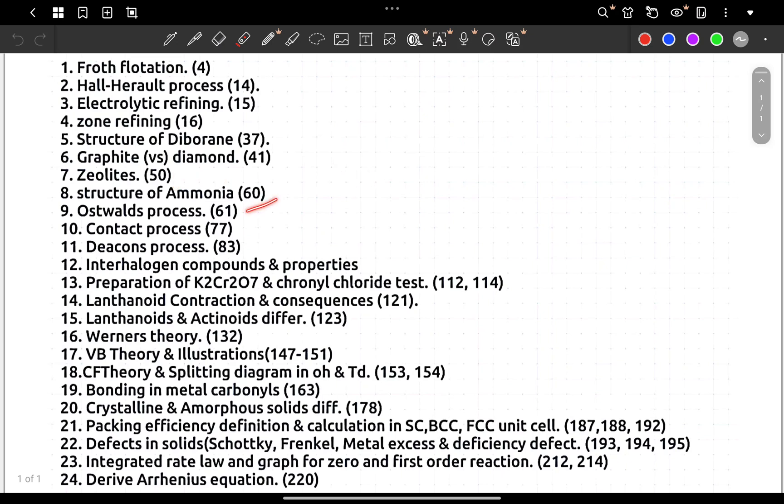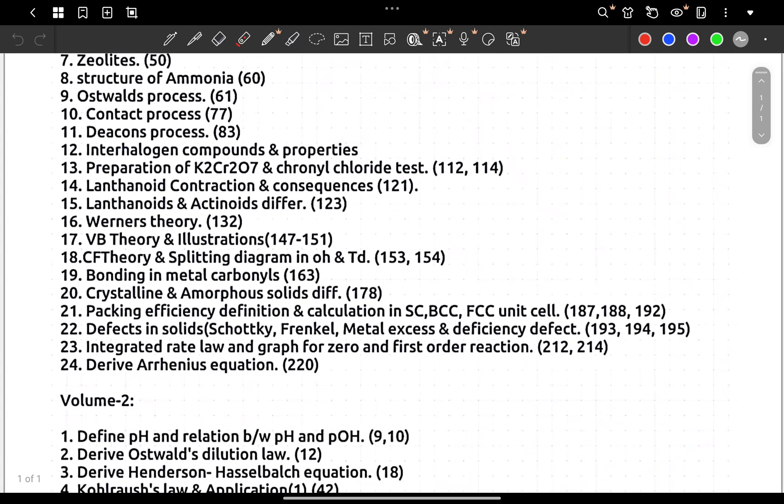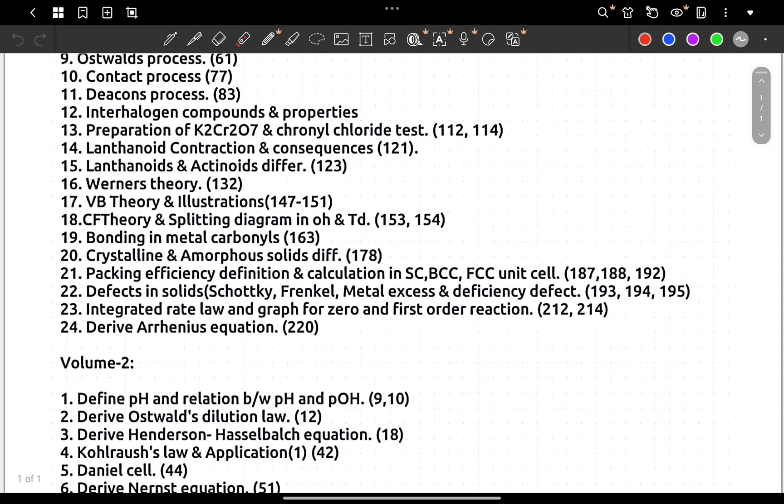Ostwald's process of nitric acid preparation, Contact process, Deacon's process - this is 3 mark question. Interhalogen compounds and properties, then preparation of K2Cr2O7 - that's 3 mark. Chromyl chloride - that's 3 mark, sometimes combined 5 mark. Lanthanide contraction and consequences, Lanthanides Actinides difference, Werner's theory.